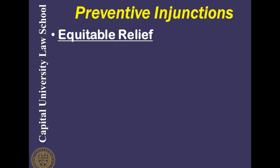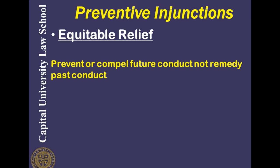Preventive injunctions are issued by courts of equity — this is what's known as equitable relief. They have some distinct characteristics that are different than actions brought in courts of law where money damages are involved. Equitable relief is designed to prevent or compel future conduct, not to remedy past conduct.